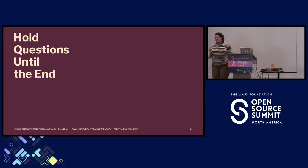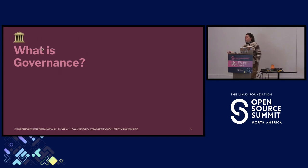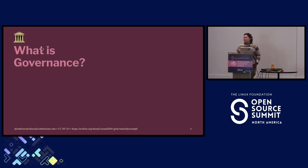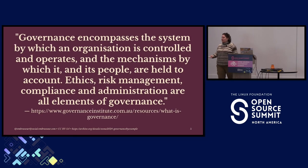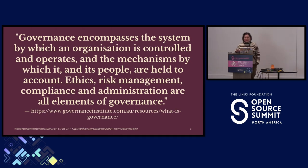We are going to start with one question that is fundamental, and that is: what is governance? You probably have some concept of this already — you wouldn't be in this room if you didn't have some idea. But to make sure we're all on the same page, I will define it. I'm going to start with three fairly formal definitions. For the upcoming slides, I will be reading them for the visually impaired. The first formal definition comes from the Governance Institute: governance encompasses the system by which an organization is controlled and operates, and the mechanisms by which it and its people are held to account. Ethics, risk management, compliance, and administration are all elements of governance.